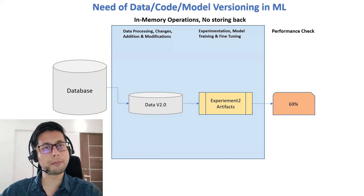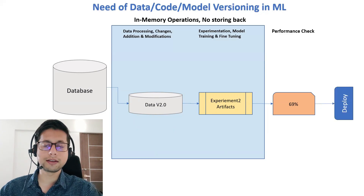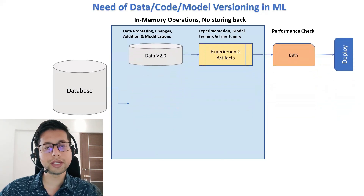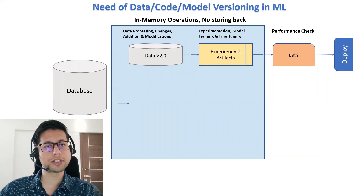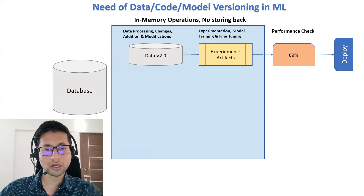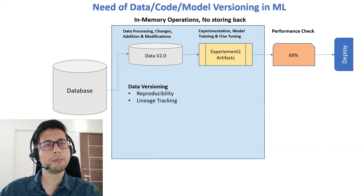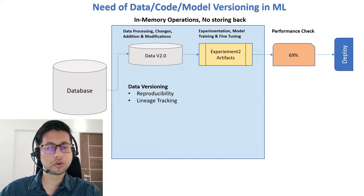If we have maintained versioning, we can simply go ahead and deploy. That is the need for the versioning concept — versioning of data, versioning of models, along with code versioning. Now that we understand why we need versioning, let's look at the different tools we can use. The main reasons for data versioning are data reproducibility, code reproducibility, and experiment reproducibility.